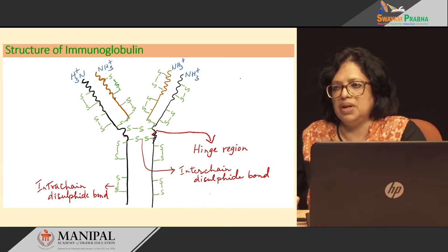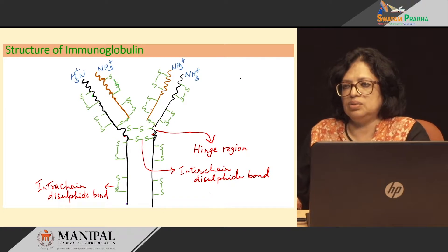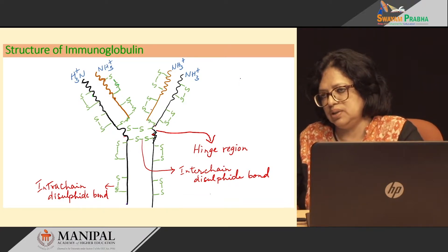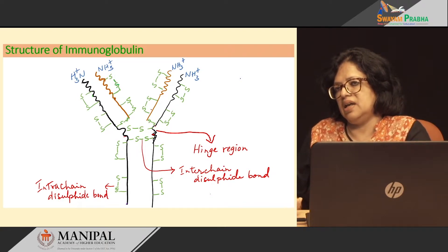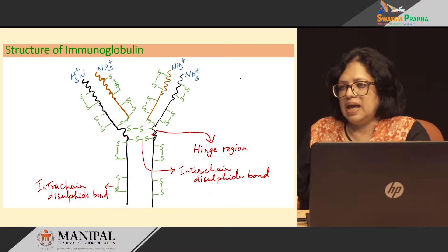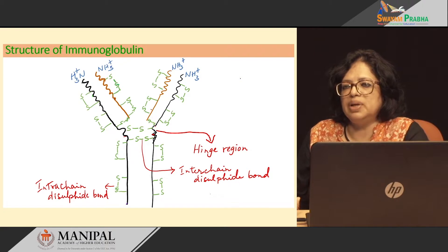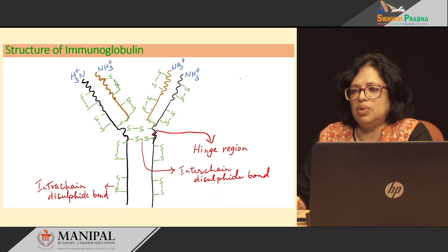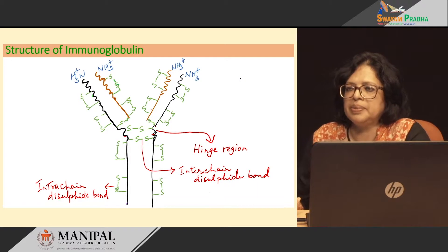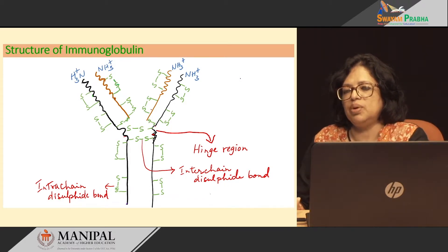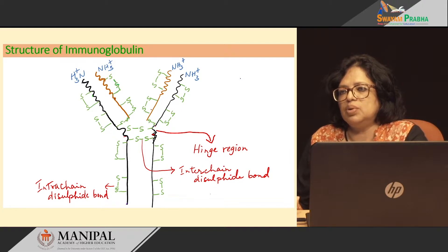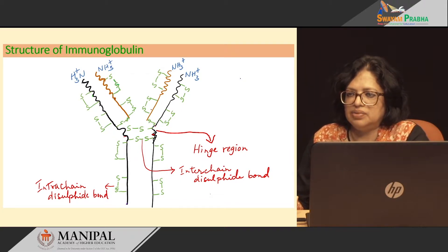This is the structure of immunoglobulin. The lines drawn in black, to the left and to the right of the molecule, indicate the amino terminals at one end and the carboxy terminals at the other end — the black lines represent the heavy chains. There are SS bridge-like structures drawn all over the molecule; these are the disulfide bridges which help to keep the shape of the molecule. The lines drawn in brown — there are two of them — are the light chains of the immunoglobulin.